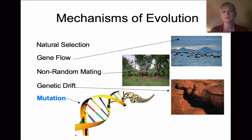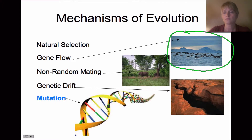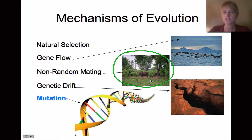Evolution is change over time, specifically changes in genetics. Natural selection causes changes in genetics, but gene flow will also cause changes. The best example of gene flow is migration — individuals coming into or leaving a population will change the genetics of that population.